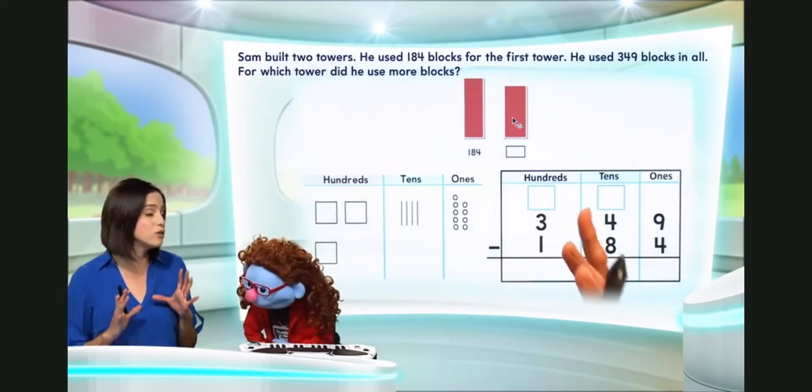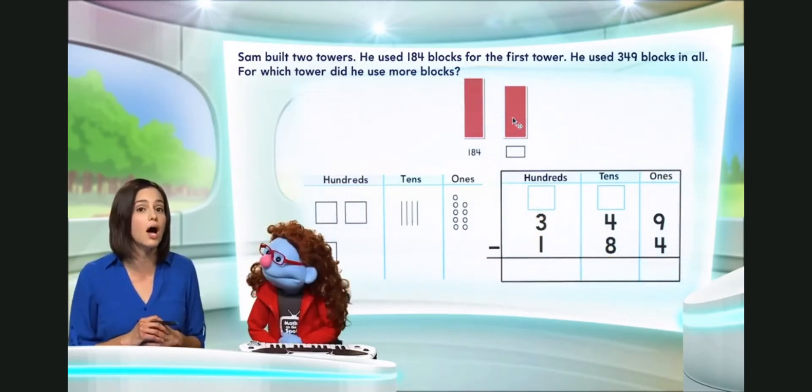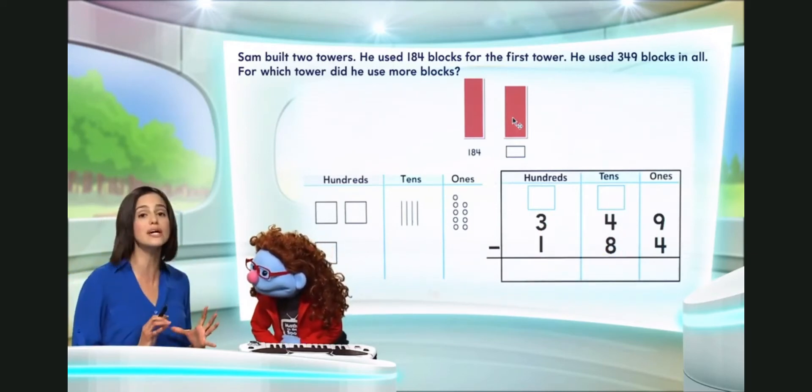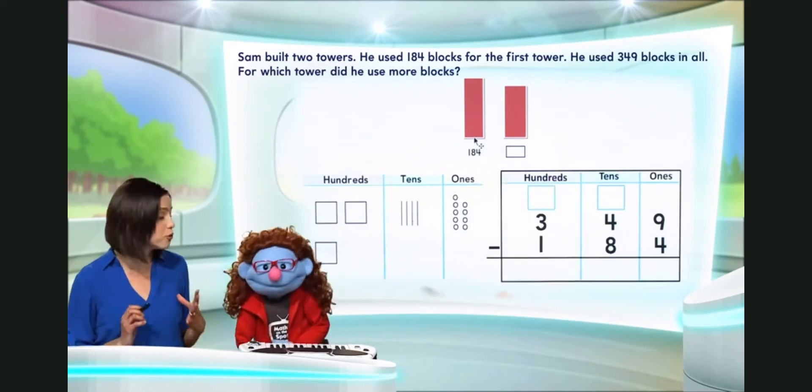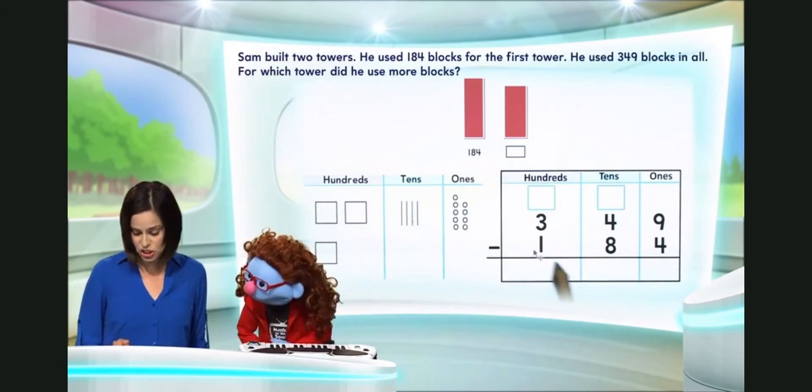Now, we don't know how many blocks are in his second tower, but we know that he used 349 blocks in all. So, what we need to do is subtract 184 from 349, just like this.